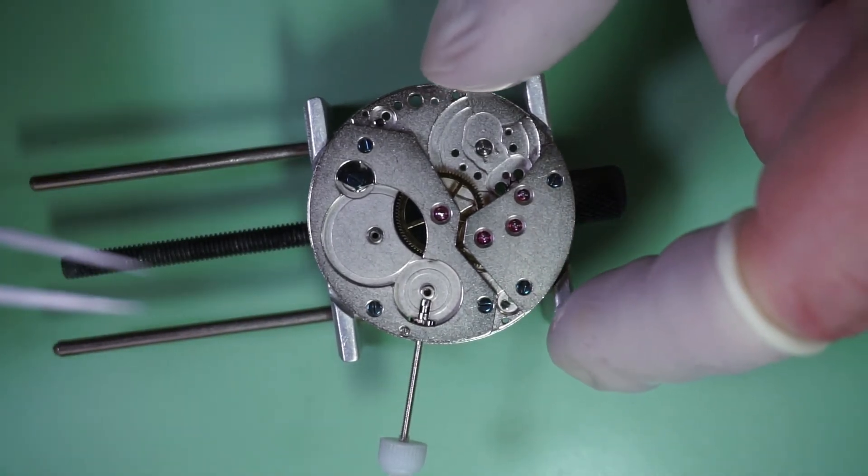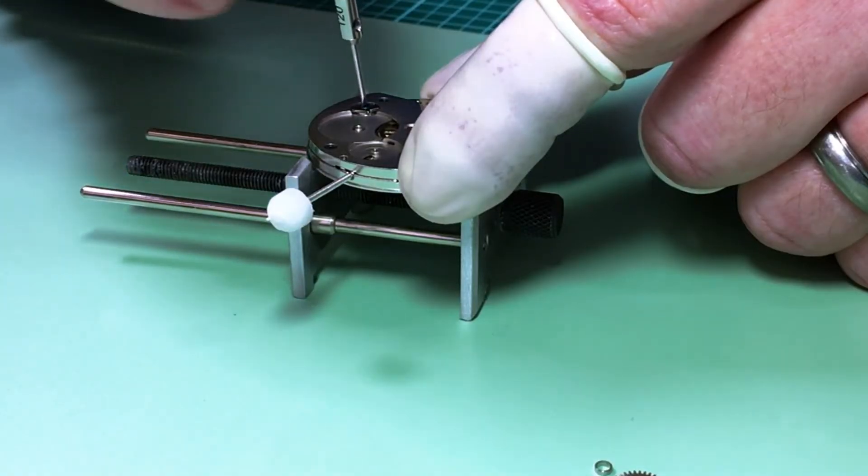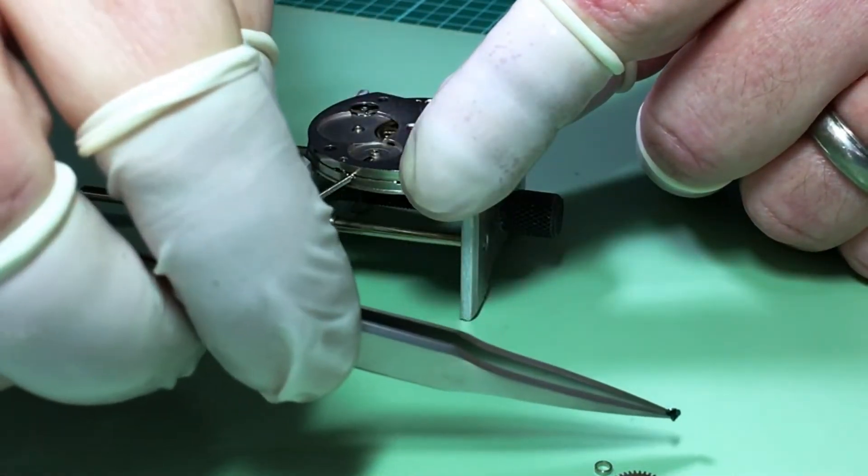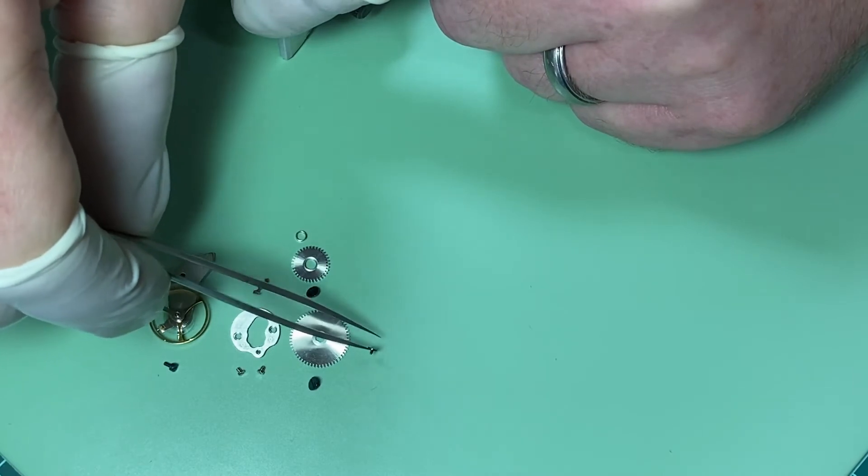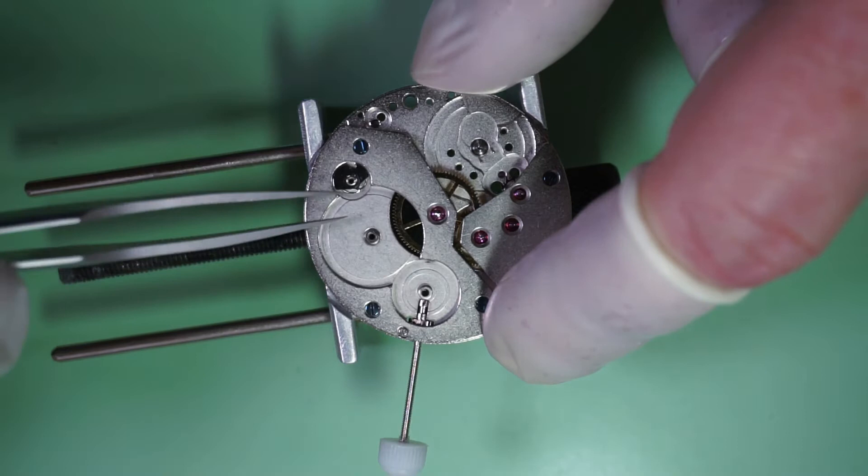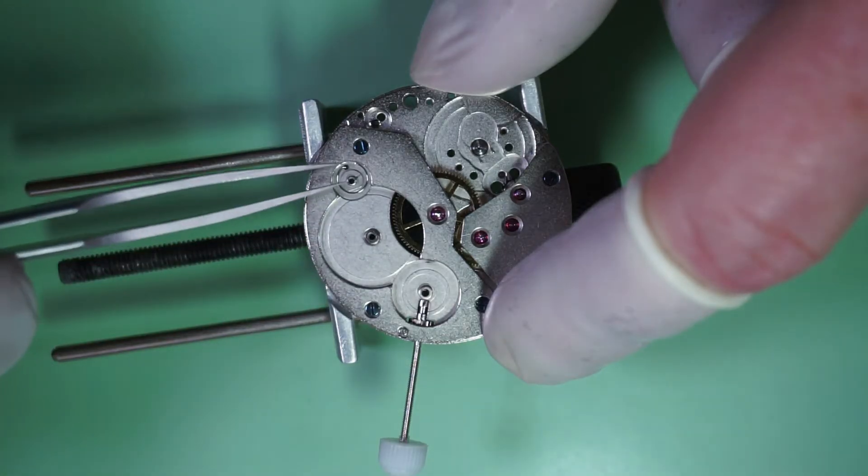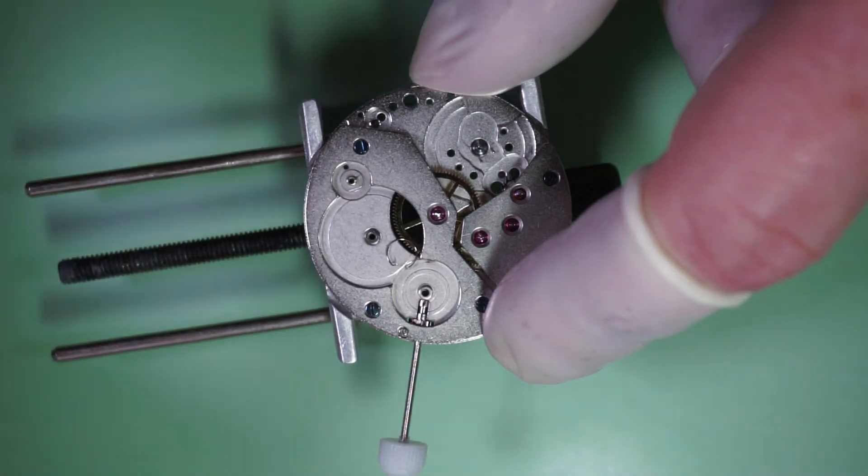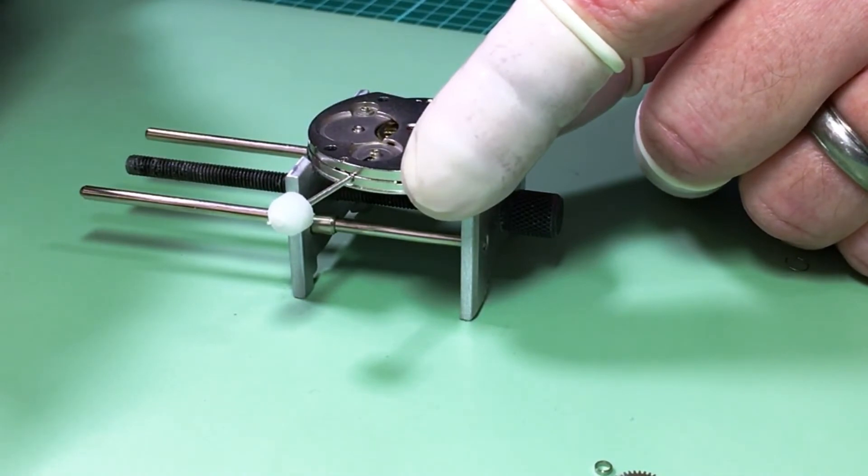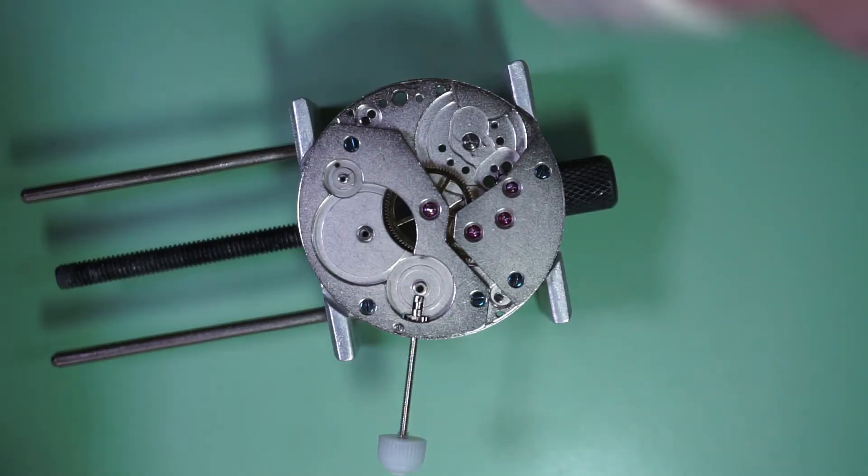And now I'll remove the click and the click spring. The click is what keeps the ratchet wheel from just releasing all the power when you wind it. And it looks to be stuck. I think I got the tweezers stuck in the slot of the screw. And this is the click and the very tiny click spring and, oh, oh no, where did it go? Oh, no. Ah, there it is. Crisis averted. Whew.